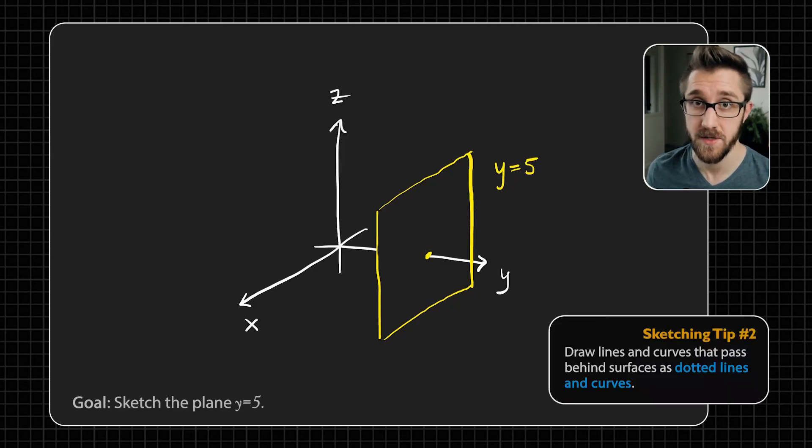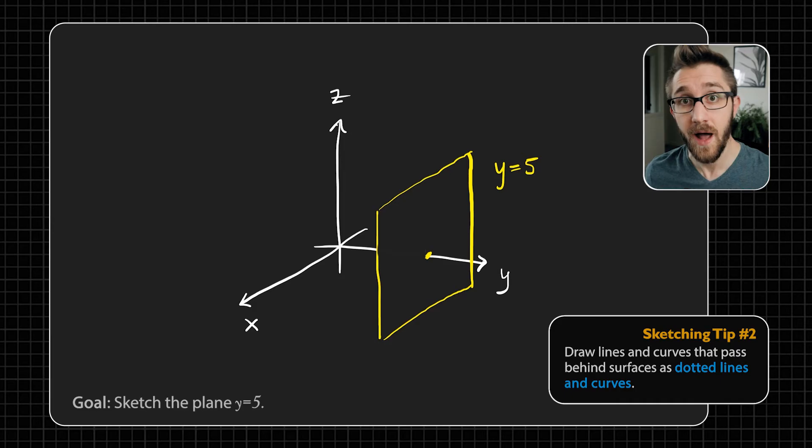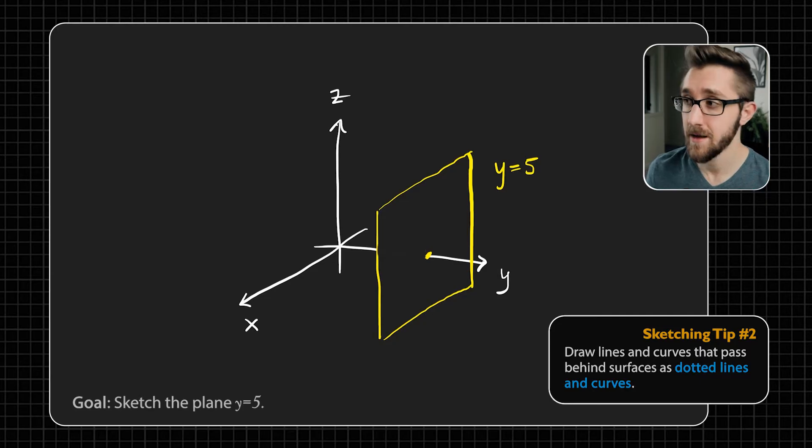But sometimes we'll want to keep track of curves that are behind other objects. So that's tip number two. When you're drawing either a line or a curve that goes behind a surface, it's best to draw it as a dotted line like this. It's sort of a way of showing that this line is still here, but we're acknowledging that it is behind the plane. And I'll note that it's behind the plane until it reaches this point where the y-axis hits the plane y equals five. Then after that, the y-axis is in front of the plane.